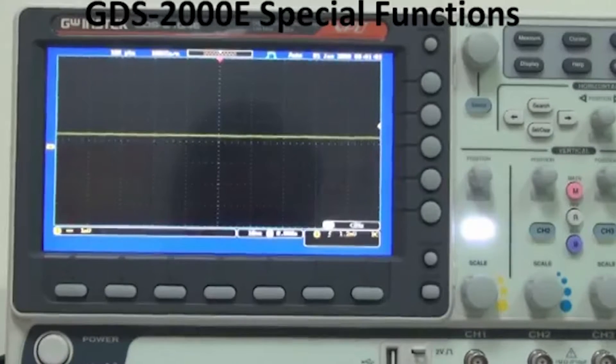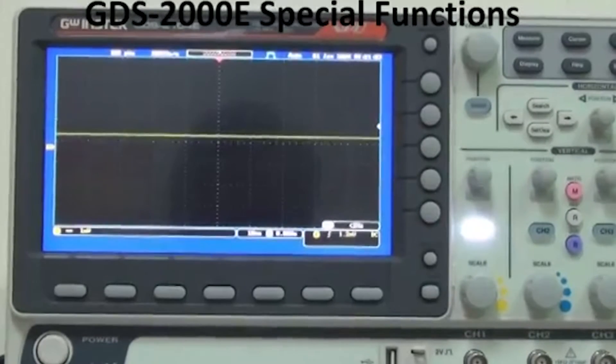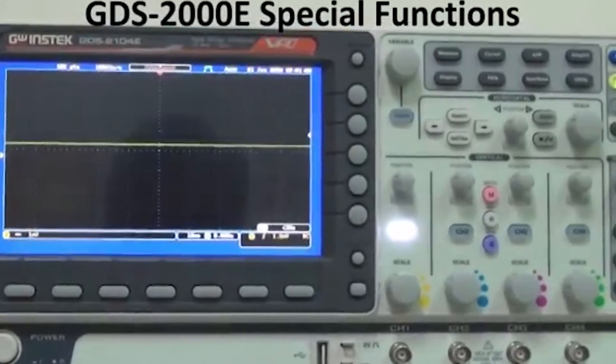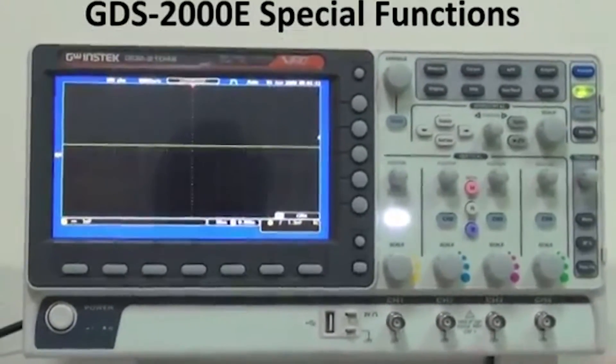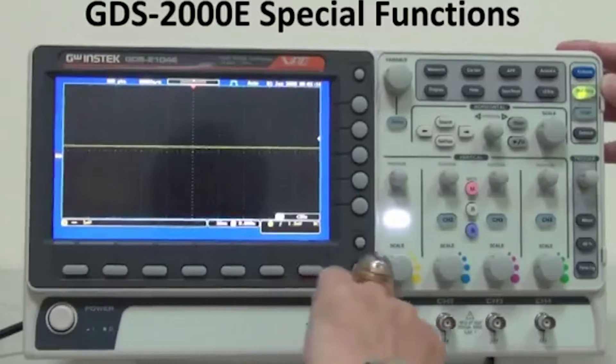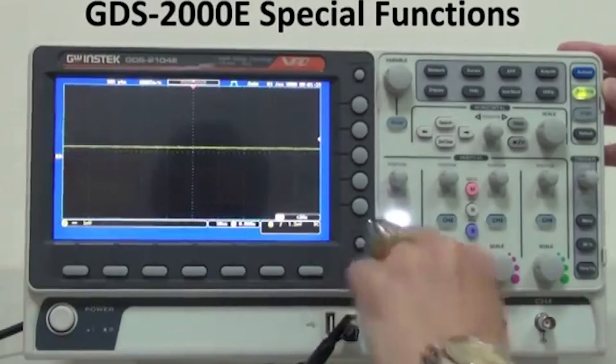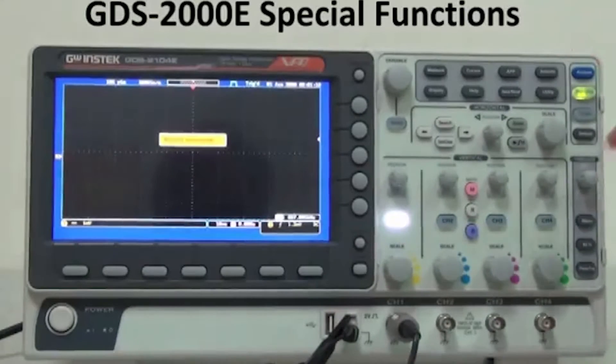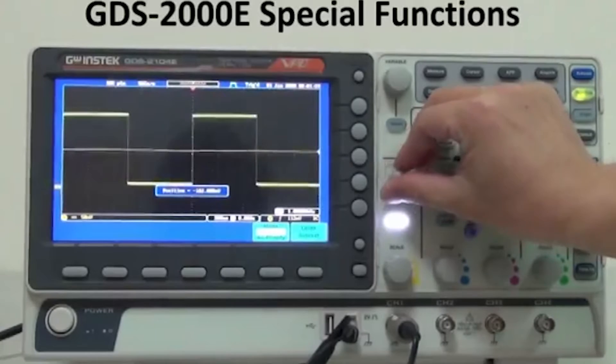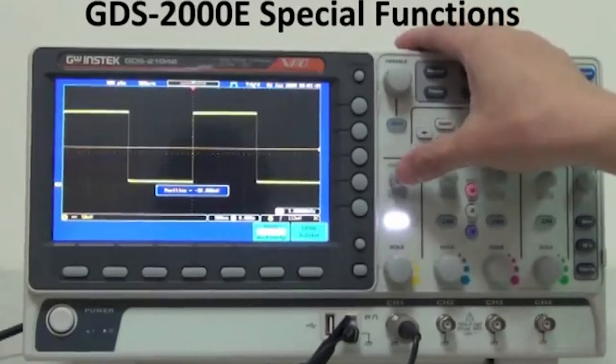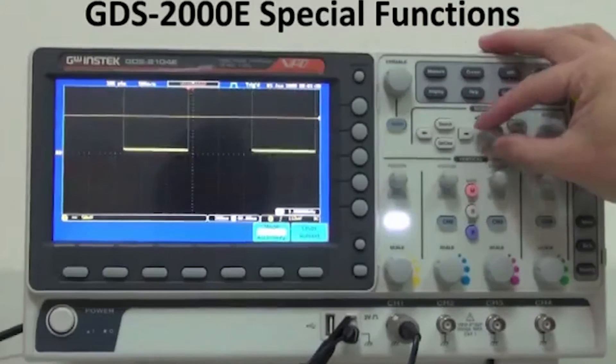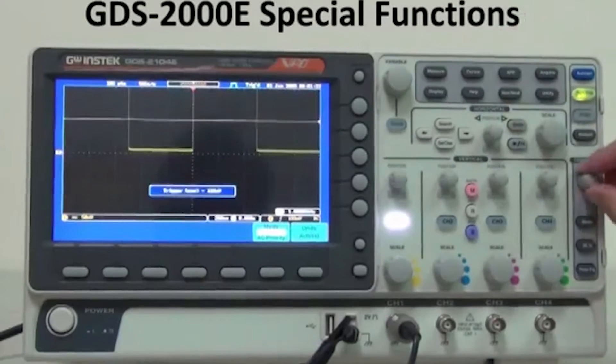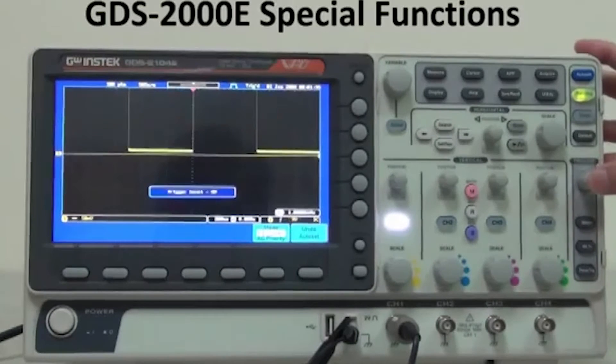Additionally, three zero keys are designed for vertical, horizontal, and trigger level to expedite the user's measurement speed. Vertical zero key, horizontal zero key, trigger level zero key.